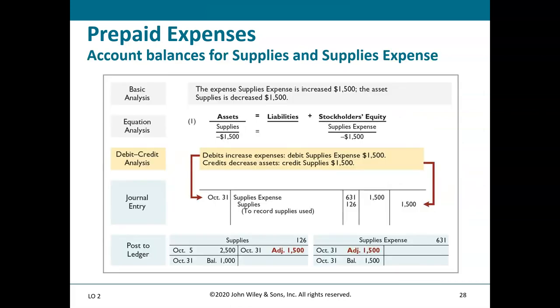Here is another way to show this: do the analysis, look at the accounting equation, figure out debits and credits, do the journal entry, and post to the ledger. The supplies account had a balance of $2,500 before adjustment; a credit of $1,500 from the adjusting entry leaves a balance of $1,000, matching our inventory count.